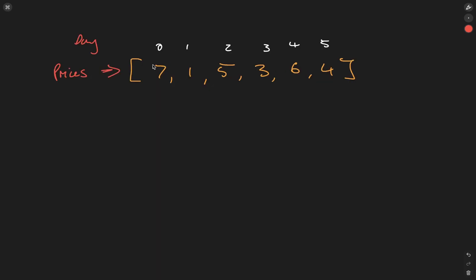We have an array of prices with days that correspond to the prices. Let's work out the best time to buy and sell stock. If we started at 7, that's clearly the largest value within this array, right? So it's not a good place to buy stock. 1, however, is a good place to buy.